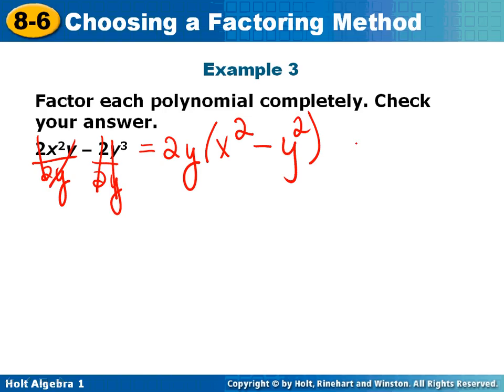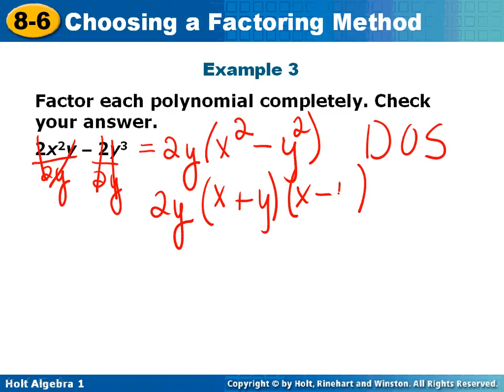I see that I have two terms, so this is going to be a difference of squares. Bring down your 2y. You need two sets of parentheses. One is a plus and one is a minus. x squared is x times x. y squared is y times y. The end.